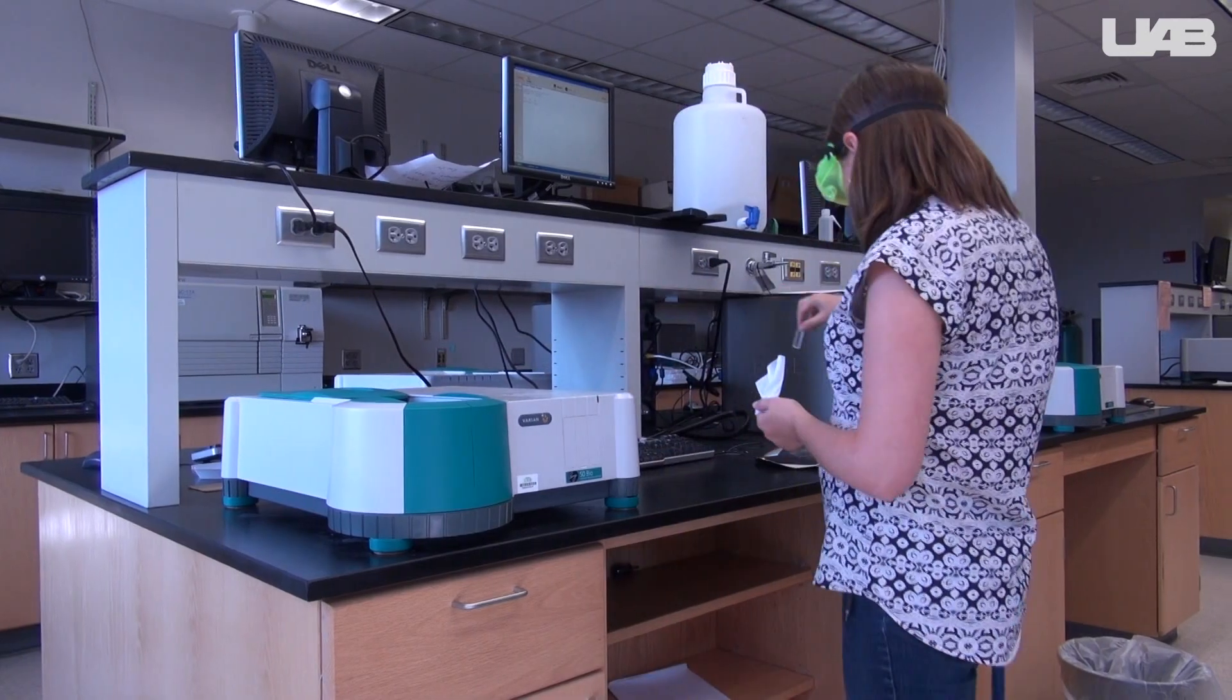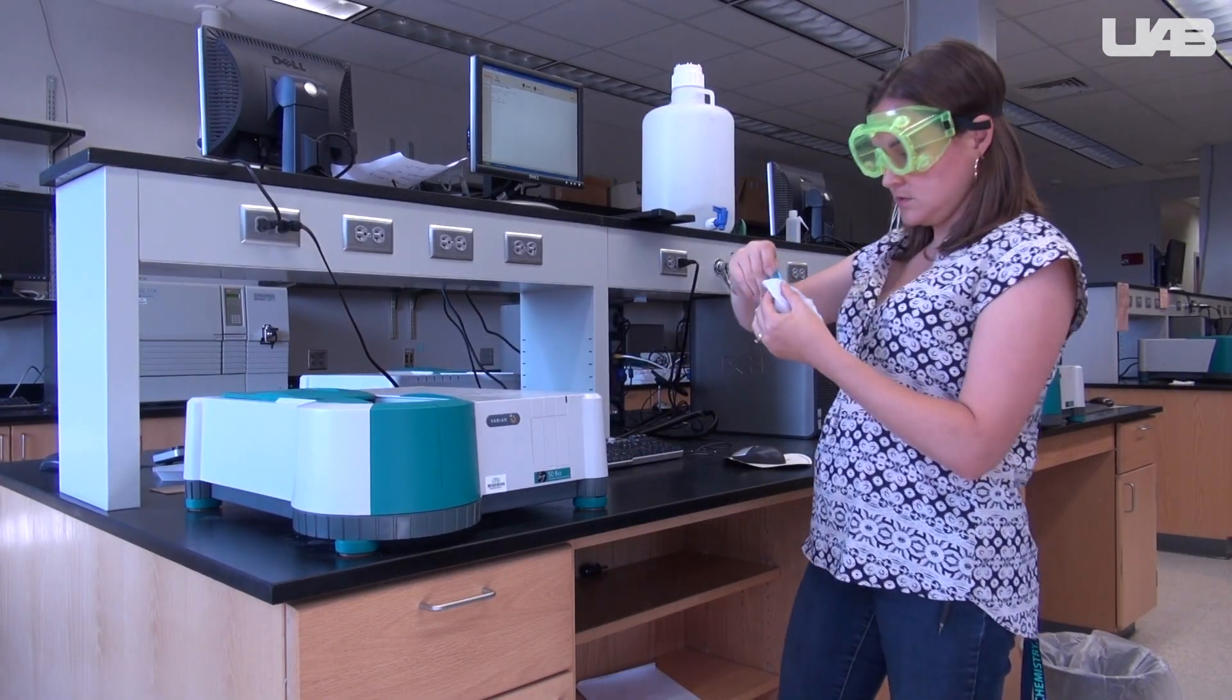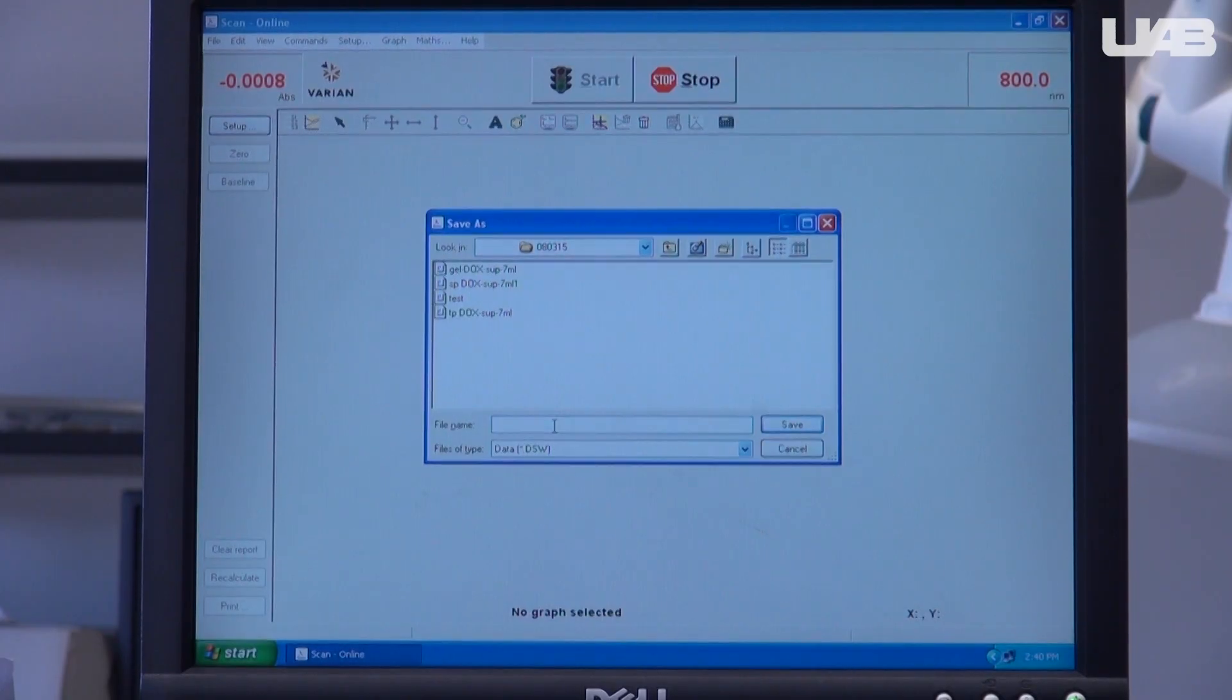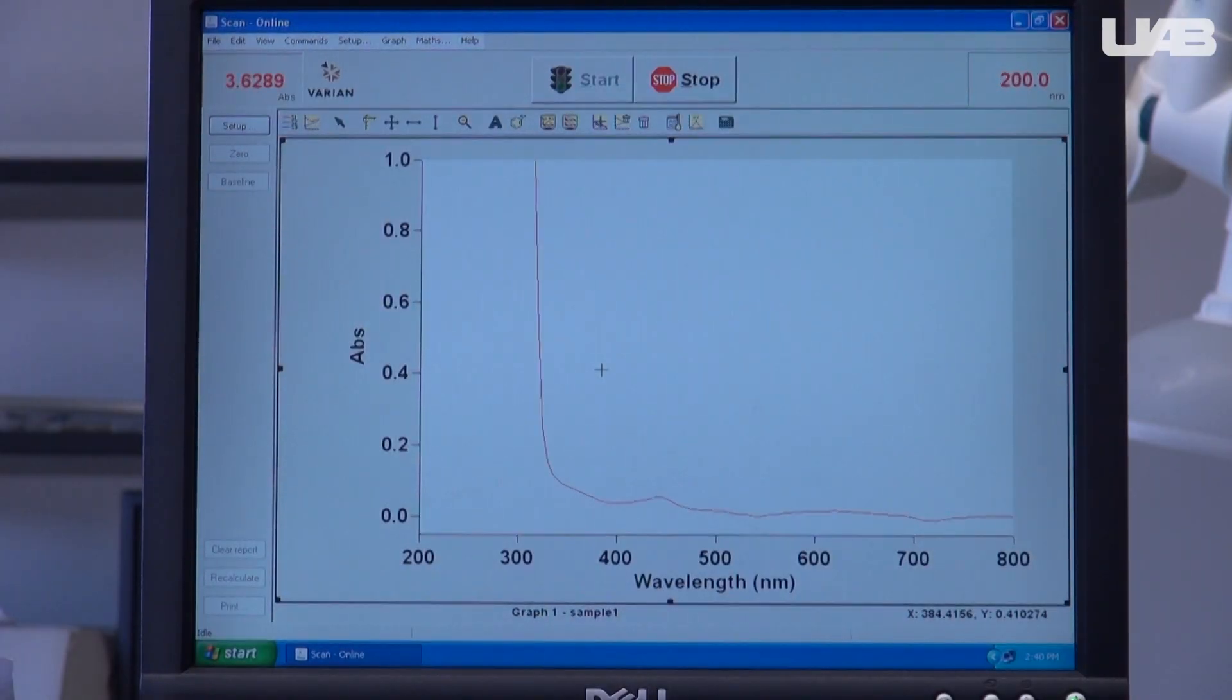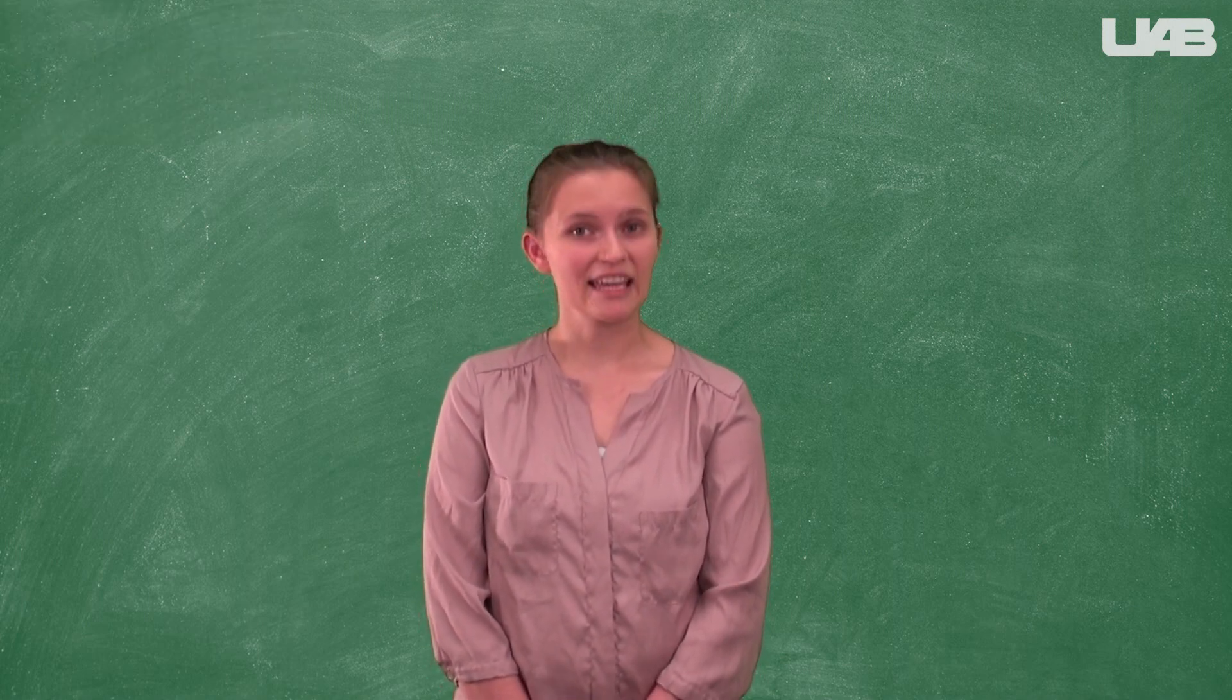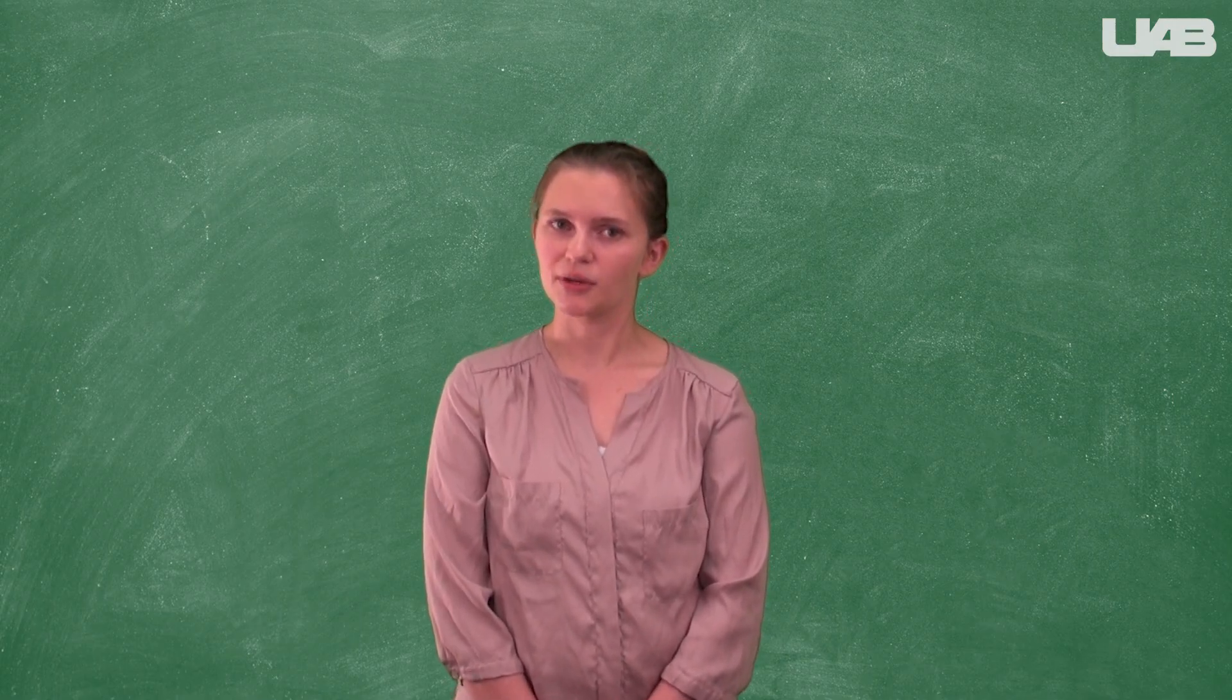Take out the blank, then pick one of your cuvettes with the colored solution in it. Clean two sides, the ones that the light will pass through, then place it in the spectrophotometer. Select start in the program, name your file and sample, then allow the spectrophotometer to collect data. Repeat this for each cuvette. You will compare the spectra that you measure with the spectra for each dye. These will be available in Canvas. Think about how you can use these results to determine how pure each of your components were.